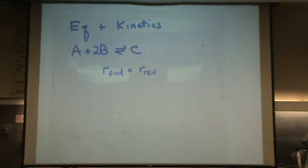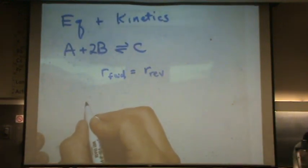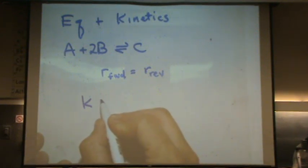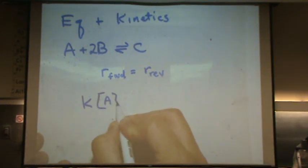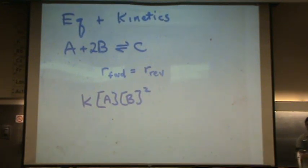We've made that assumption before to solve for reaction mechanisms. Let's write out the details here. K for the forward reaction times A times B squared, if we consider this an elementary step.